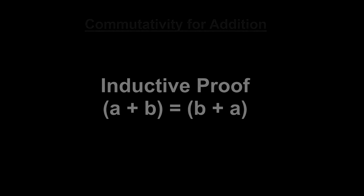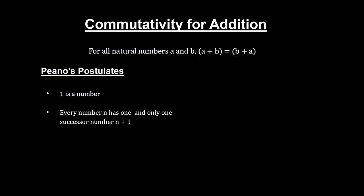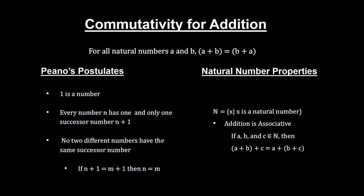It is quite common in mathematics to use inductive reasoning for proofs of the sort where you're trying to prove something is true for all numbers in an infinite set. Proving the commutivity property for addition, a plus b equals b plus a, for all counting numbers, is one of them. All we have to go on are our postulates and one proven theorem. The postulates are 1 is a number. Every number n has 1 and only one successor number, n plus 1. No two different numbers have the same successor number. And the associative property of addition. a plus b plus c is equal to a plus b plus c.